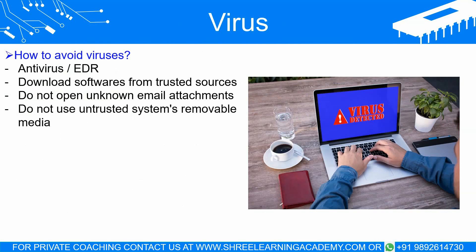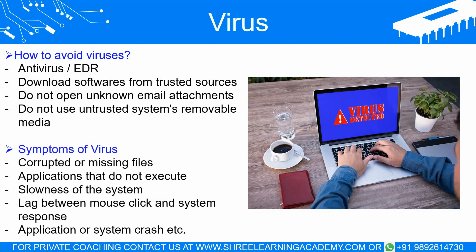Because if we do not reduce the human risk, then no technical protection can save us. Some examples that reduce the risk are not downloading software from non-vendor sources, not opening unknown email attachments, and not using untrusted systems or removable media. If a system is infected with a virus, then some symptoms can be seen such as corrupted or missing files, applications that do not execute, slowness of the system, lag between mouse click and system response, and application or system crashes. Such symptoms can indicate virus infection, although those symptoms can also be of other malware infections.